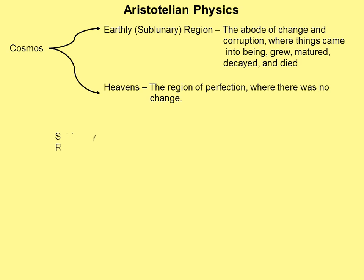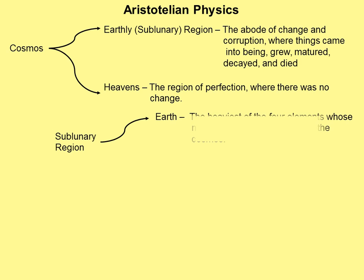Now the sublunary region, or earth, was broken up itself into elements. You had earth, the heaviest of the four elements, then water, air, and fire. To Aristotle, these four things composed everything in the universe. Everything was either earth, water, air, fire, or some combination.